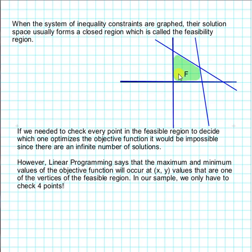However, the concept of linear programming says that the maximum and minimum values for the objective function will occur at the corners or the vertices. So we only have to check points at each of the corners of the vertices.